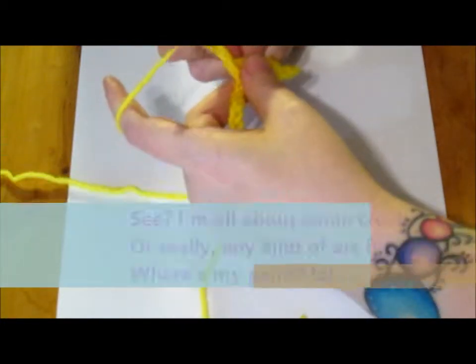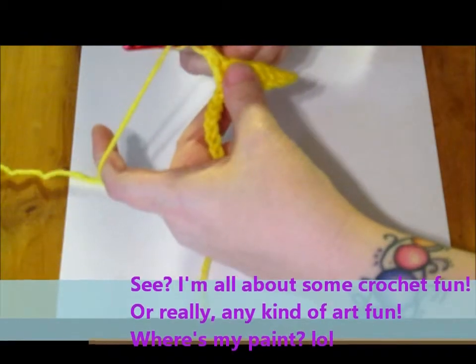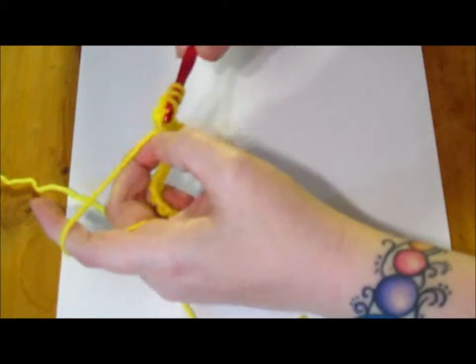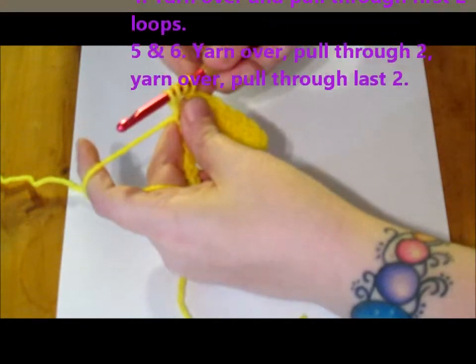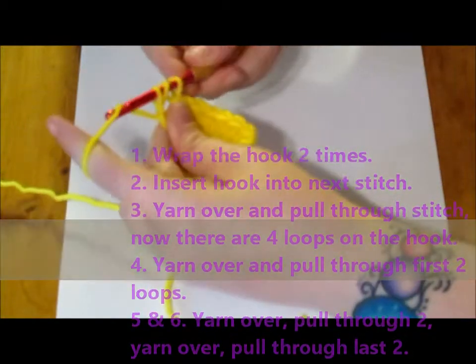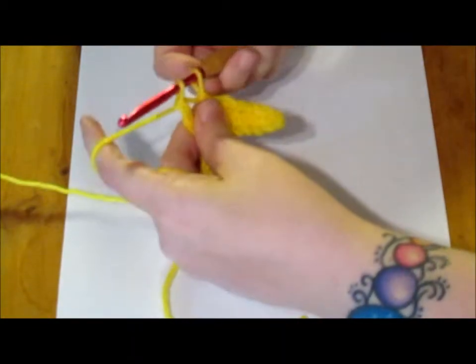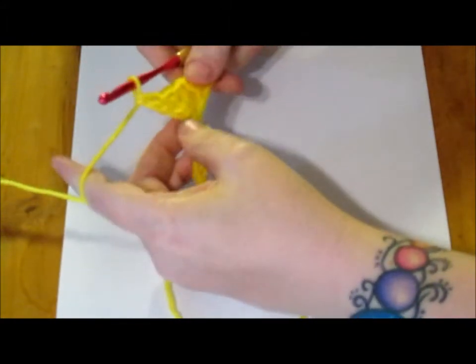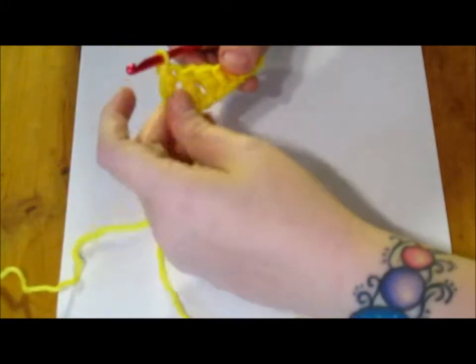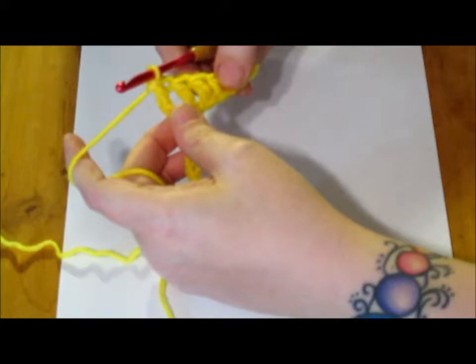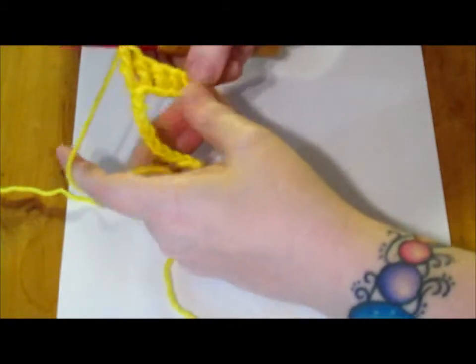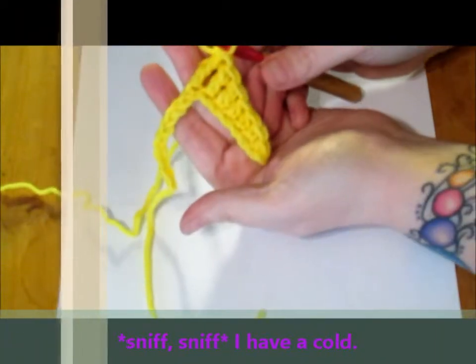To do a triple stitch, you yarn over twice. So, starting off, you have one, two, three loops on your hook. Slip it through that next stitch, yarn over and pull through. Now, you have four loops on your hook. You're going to yarn over and pull through two. Now you have three loops, yarn over and pull through two. Now you have two loops, yarn over and pull through two. So see, we yarned over three times, which is what makes it the triple stitch. You can go up to six that way. I haven't really seen it work very well for seven, but I'm sure it would. But you can see how each stitch that we've done is just a little bit taller than the previous stitch.